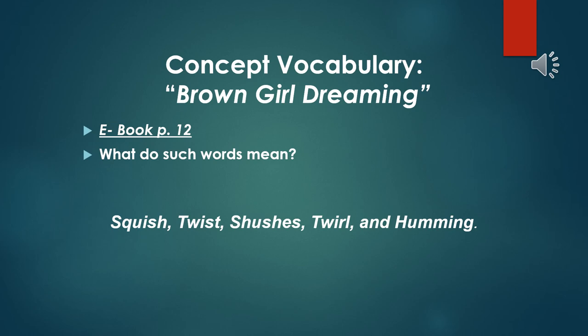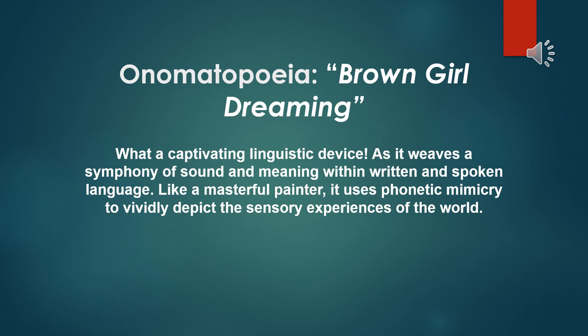We'll look at the word choices regarding the writer herself, Jacqueline Woodson — why did she choose such words, and how do those words reflect the character's own point of view, behavior, character, and even historical background? Moving on to one of the most captivating linguistic devices used by Woodson, as she weaves a symphony of sound and meaning within the written and spoken language, vividly depicting the sensory experiences of her childhood world.